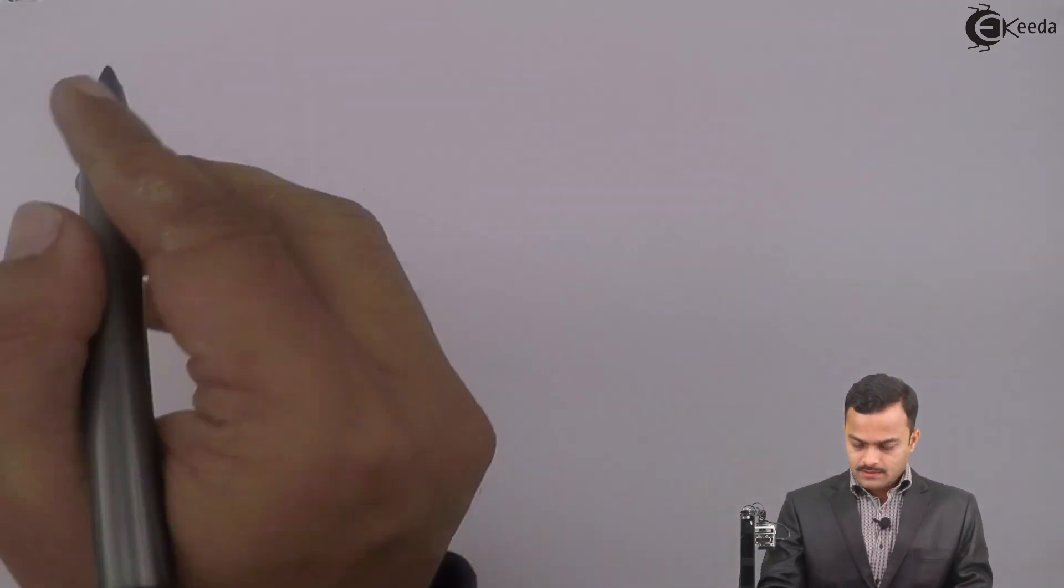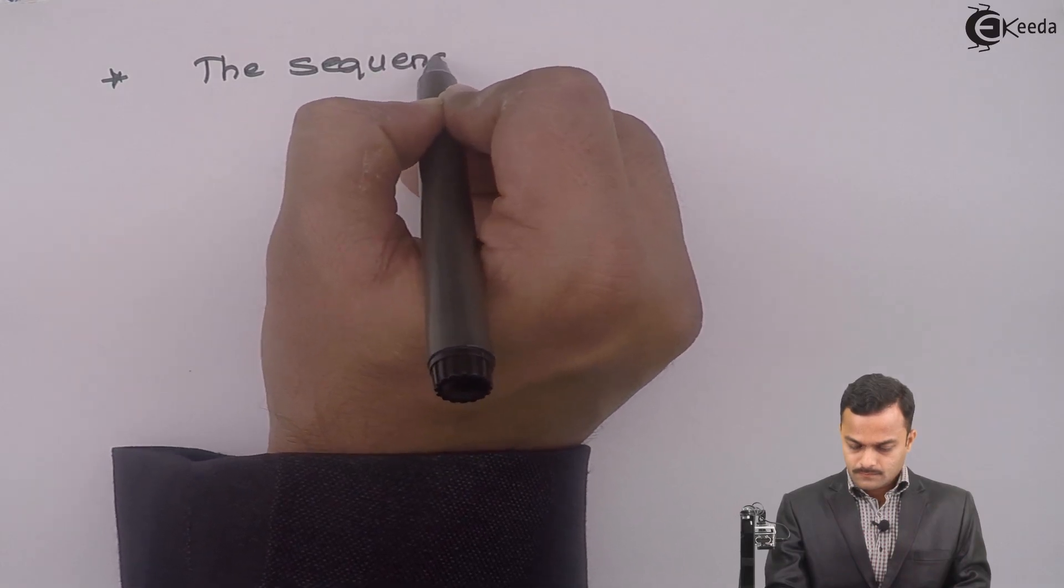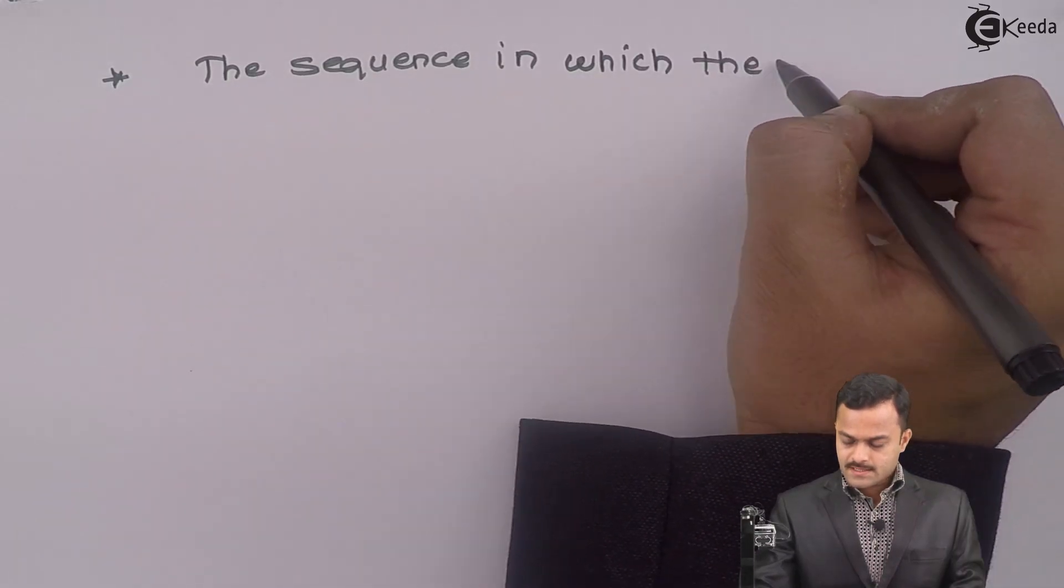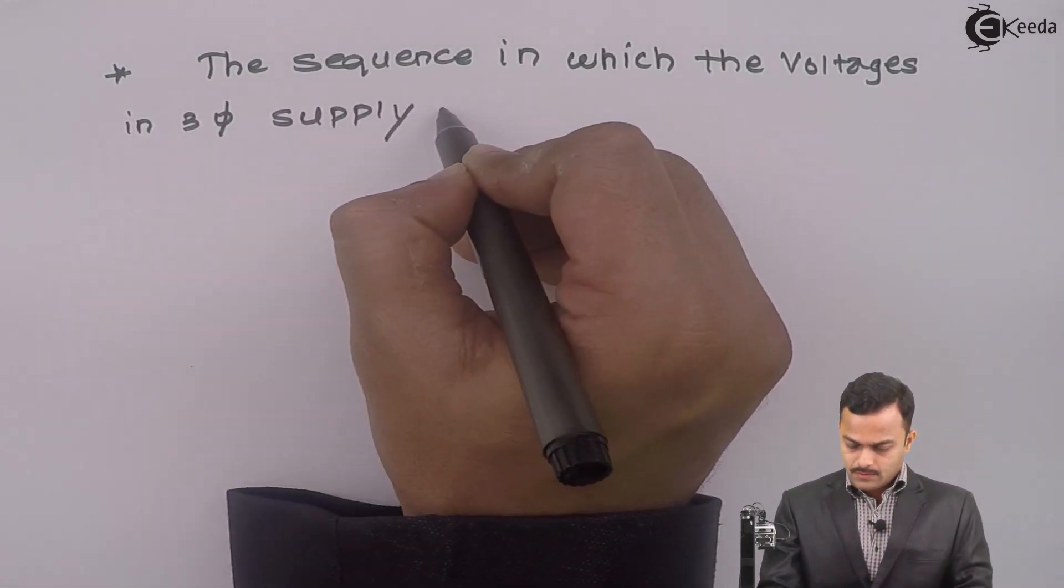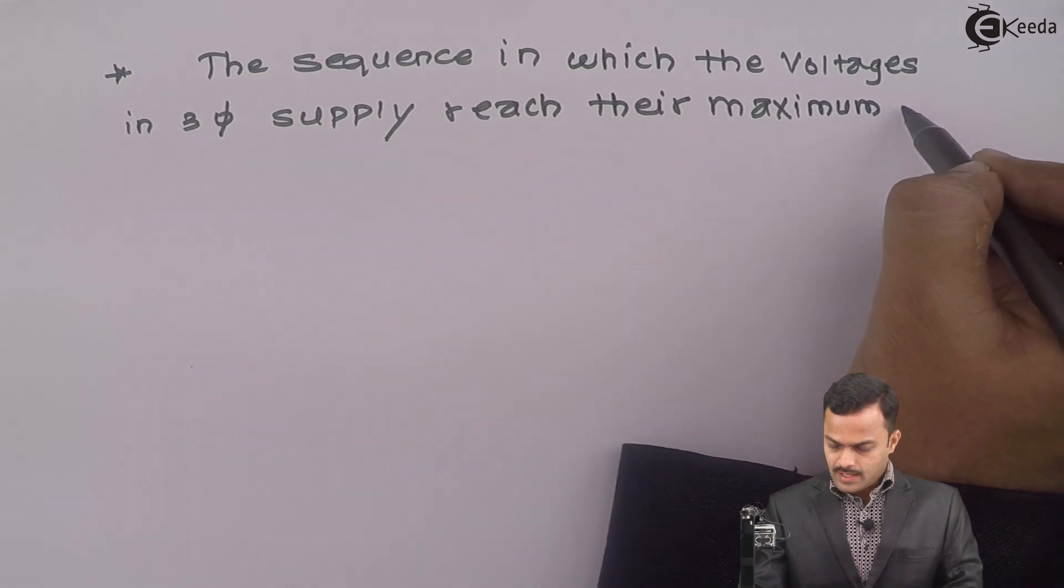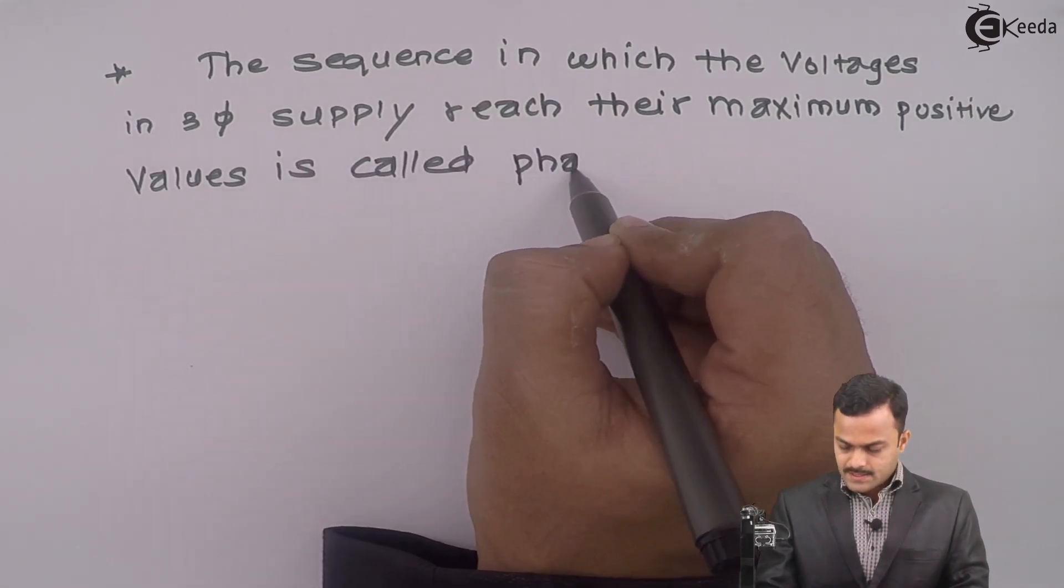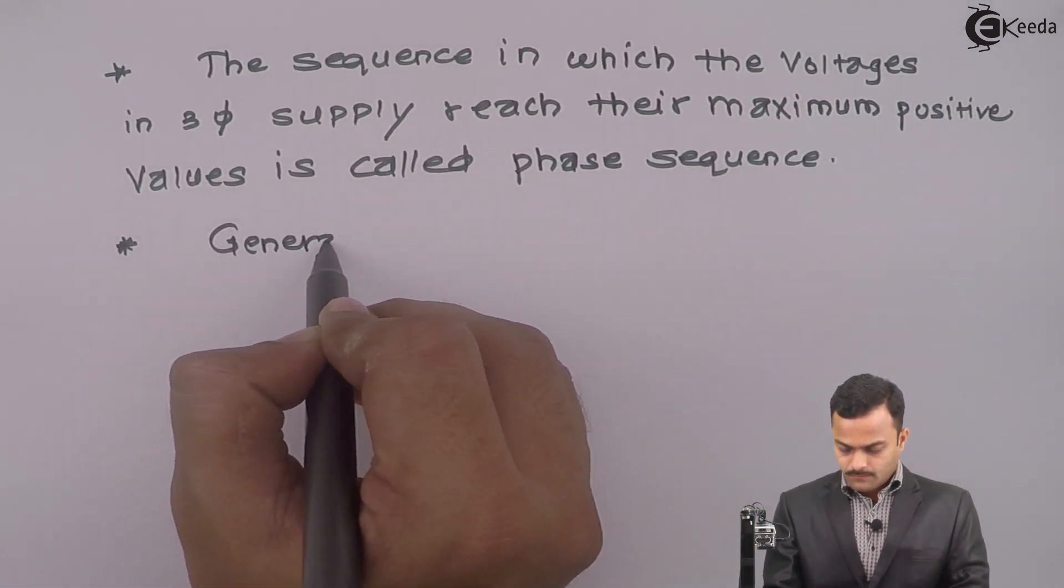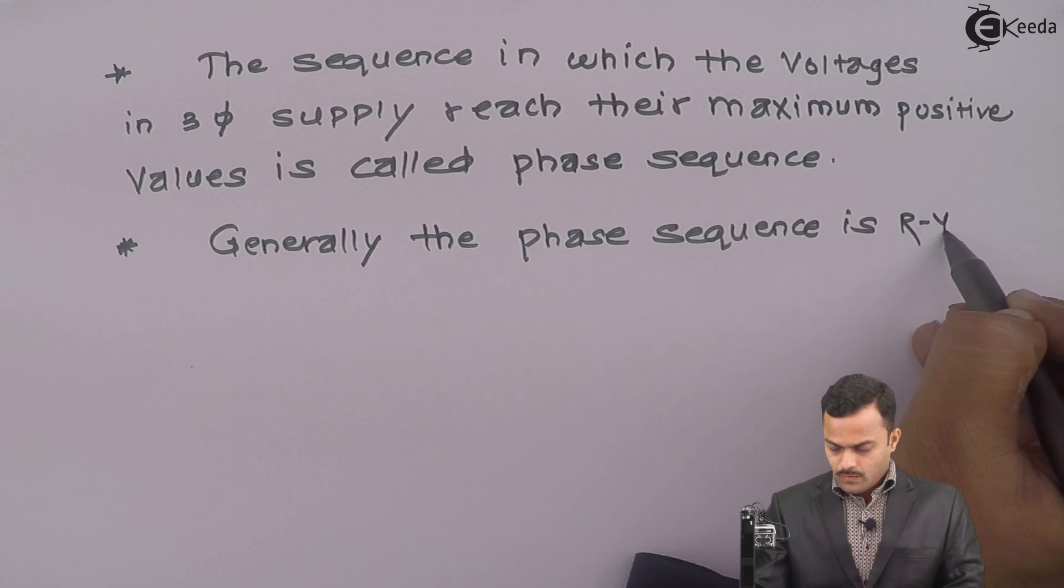So, let us define it. The phase sequence is nothing but the sequence in which the voltages in three-phase system or you can say three-phase supply reach their maximum positive values is called phase sequence. Generally, the phase sequence is R, Y, B.